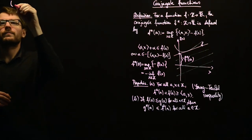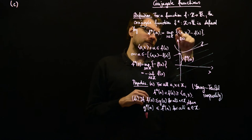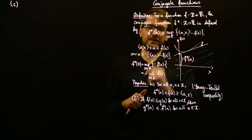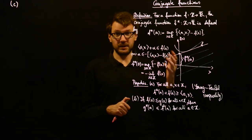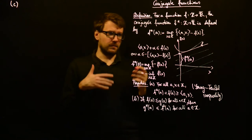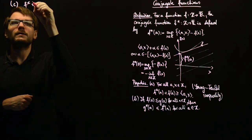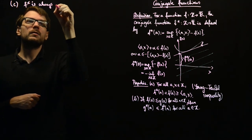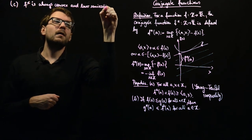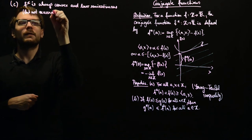The next property is also simple. We see that we have a supremum over some functions, and looking more closely, x is a constant so we have a supremum over affine functions. Affine functions are always continuous and convex — in fact, convexity is satisfied with equality. Therefore, f star is always convex and lower semicontinuous, but not necessarily proper.